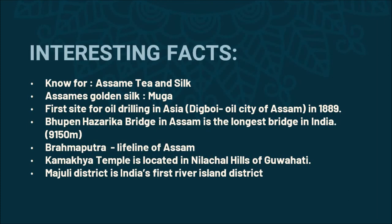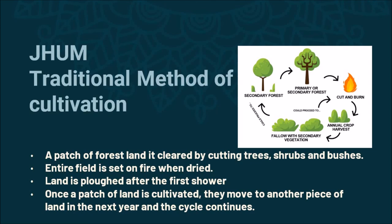Brahmaputra is the lifeline of Assam. The famous Kamakhya Temple is located in the Nilachal hills of Guwahati. Majuli district is India's first river island district — this is a very important question which has been asked in many exams. The important cultivation method of Assam is Jhum cultivation.